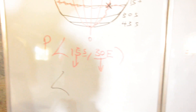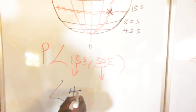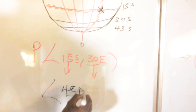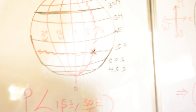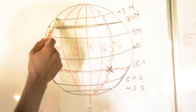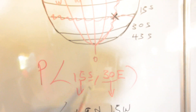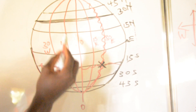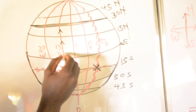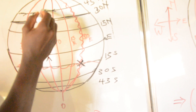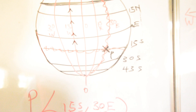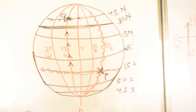Another example: when you're told the point is 45 degrees north and 15 degrees west, find 45 degrees north — it's located here. And 15 degrees west is here. Where do those two lines intersect? They intersect at this place, so this is where our point Q is. This is where Q is and this is where P is. And we are done with locating places on the surface of the earth.